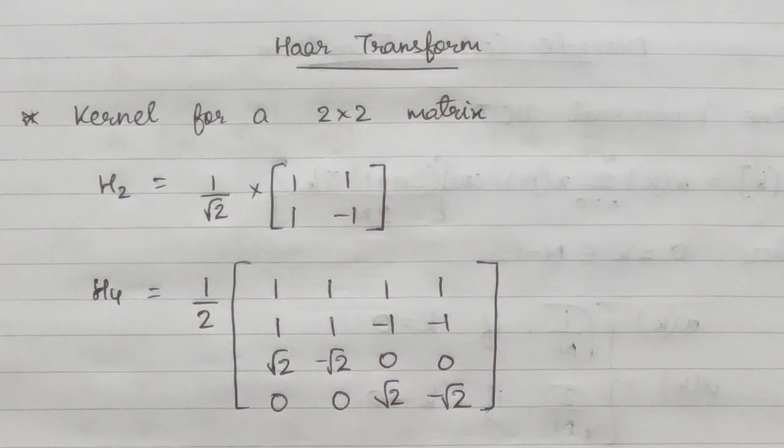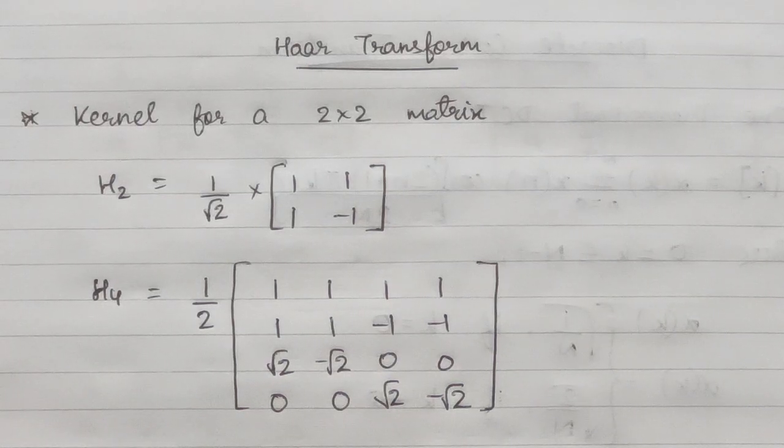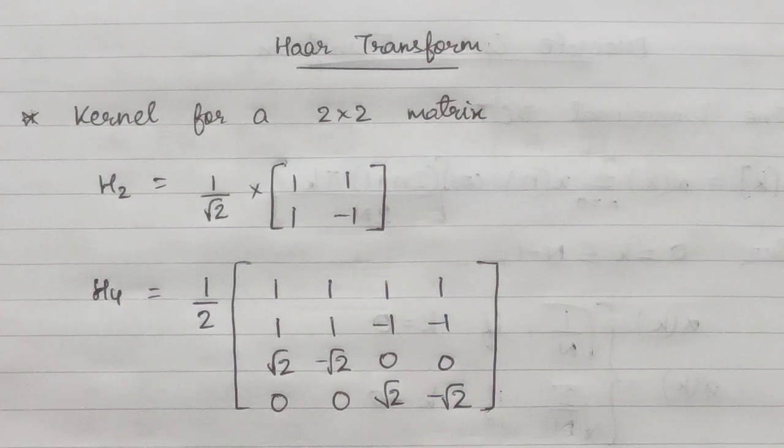It mainly relies on averaging and differencing values in an image matrix to produce a matrix which is sparse or nearly sparse. A sparse matrix is something which mainly contains a large portion of its entries as zeros.